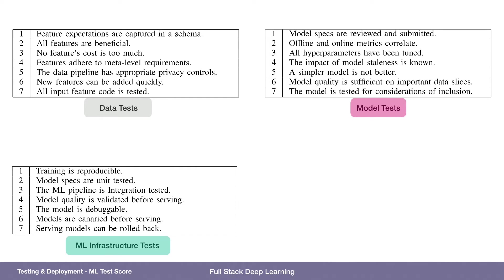For ML infrastructure tests: training is reproducible, model specs are unit tested, the ML pipeline is integration tested, model quality is validated before putting it in production, the model is debuggable, and models are canaried before serving. That refers to deploying a small portion of your production predictions through the new model first, so that if something goes wrong it only affects a small part of users and you can roll it back. So the last one is: models can be rolled back.